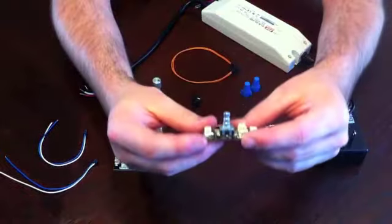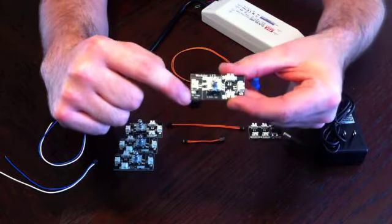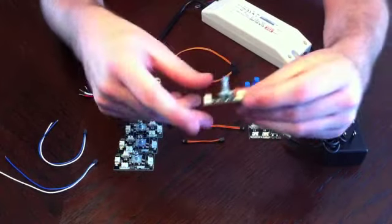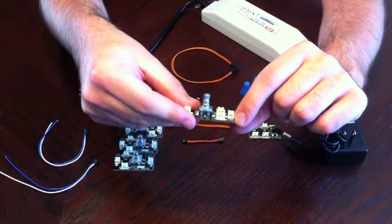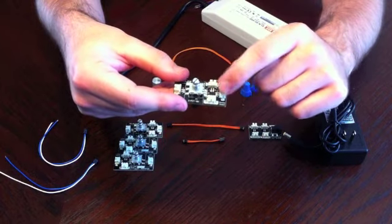And as I said before, it says right on here which connector is the DC power input which connects to the DC jack, and which one is the dimmer output which connects to the driver, which you have 3 of them right here.